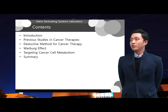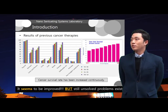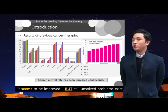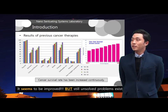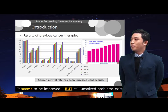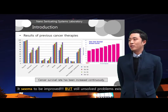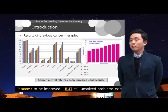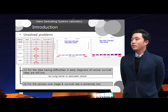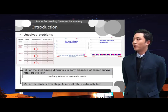I'll introduce you why targeting cancer cells became important in cancer therapies. The left figure shows 5-year survival of major cancer sites and the right figure shows breast cancer survival rate. In most cases, cancer survival rate has been increased recently. But if we look into details, unsolved problems still exist. For sites having difficulties in early diagnosis of cancer, such as lung or pancreatic, survival rates are still low.